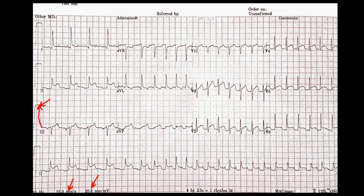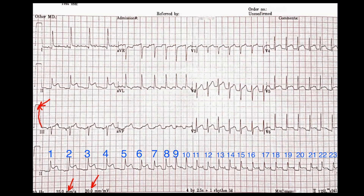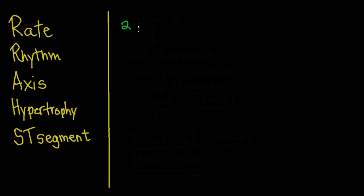Just by looking at this EKG you can tell right off the bat that the spaces between the QRS complexes at the beginning are different than at the end, so there may be a rhythm change. This is a 10-second strip, so because there are six 10-second periods in a minute, we can count 23 QRS complexes and multiply by 6, giving us close to 138 beats per minute — that's the average for the whole EKG.